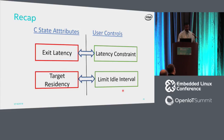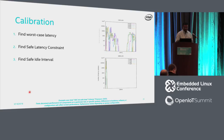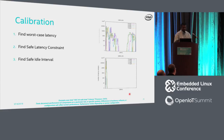With this information, let us look at an example tuning process. For tuning, we first calibrate the worst case, then find how we can achieve consistent latency behavior. We have two methods: using the latency constraint, and using the idle interval.